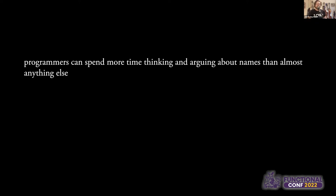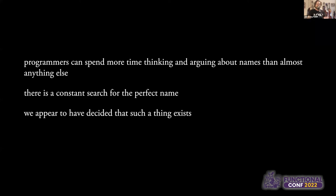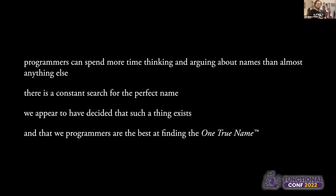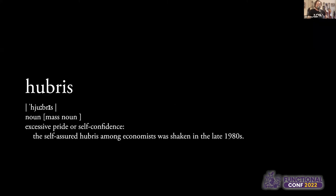As programmers, we tend to think and spend an enormous amount of time arguing and talking about names — more possibly than anything else. We're constantly searching for that perfect name. The idea that we programmers are uniquely gifted with the ability to decide and prescribe the one true name that something should be called, and that we really are the best at doing it. Of course, there's actually a name for this. It's hubris.